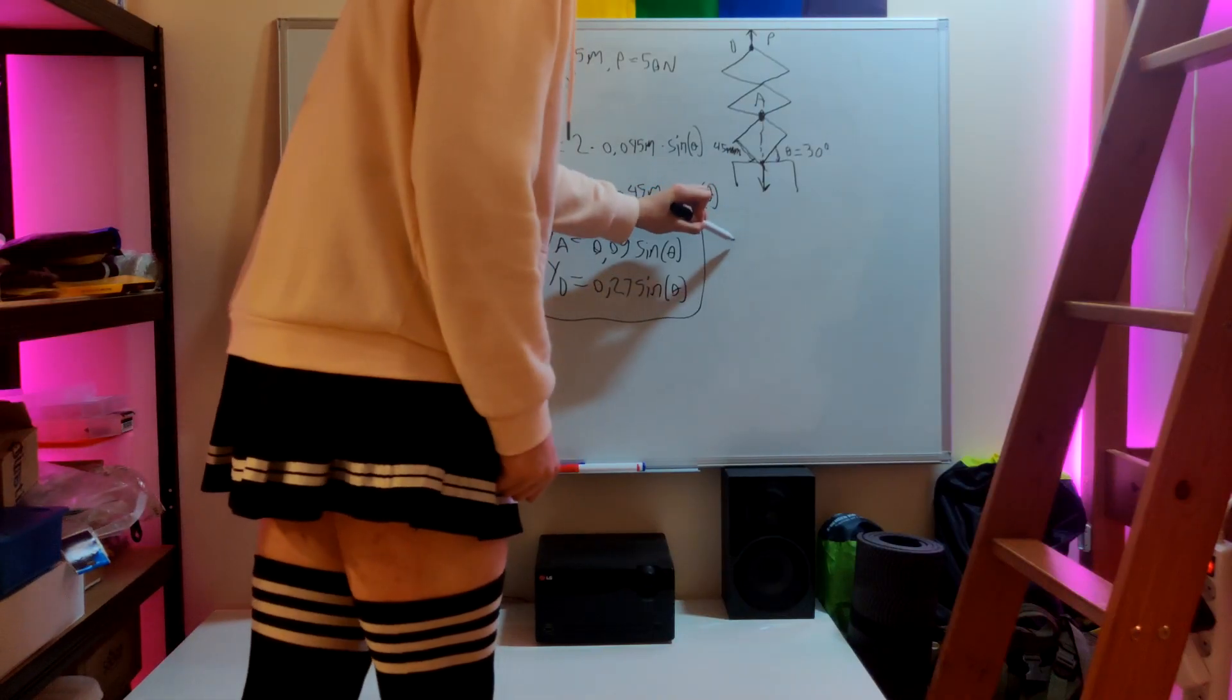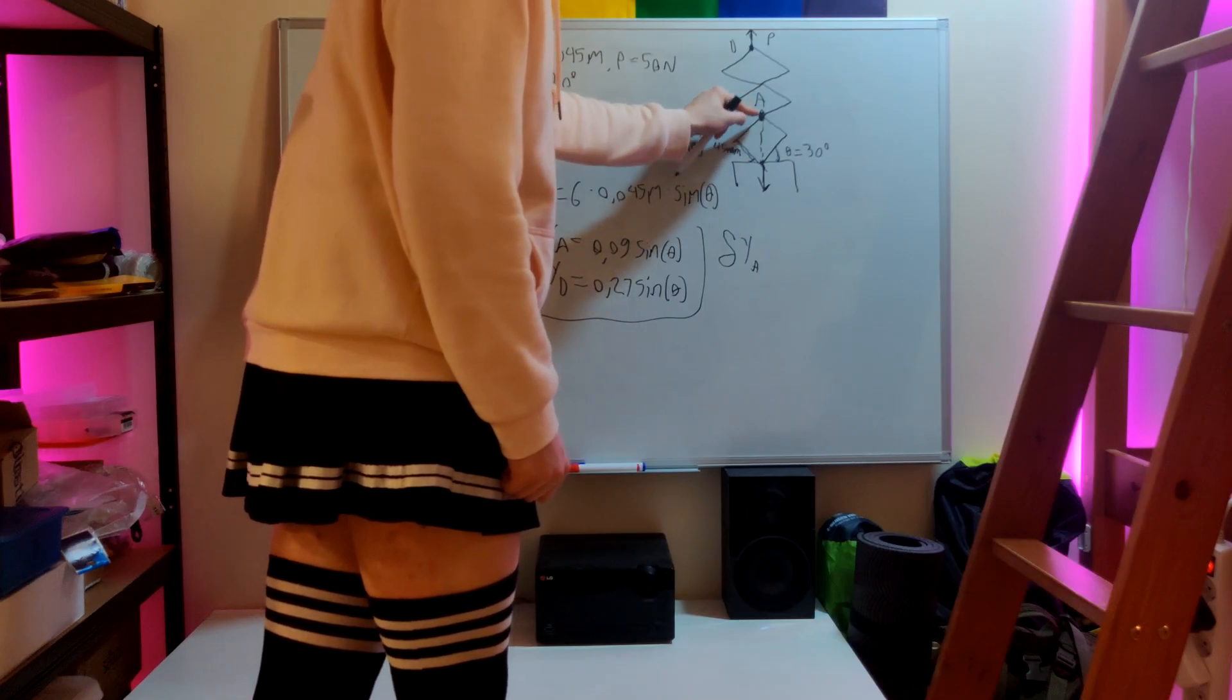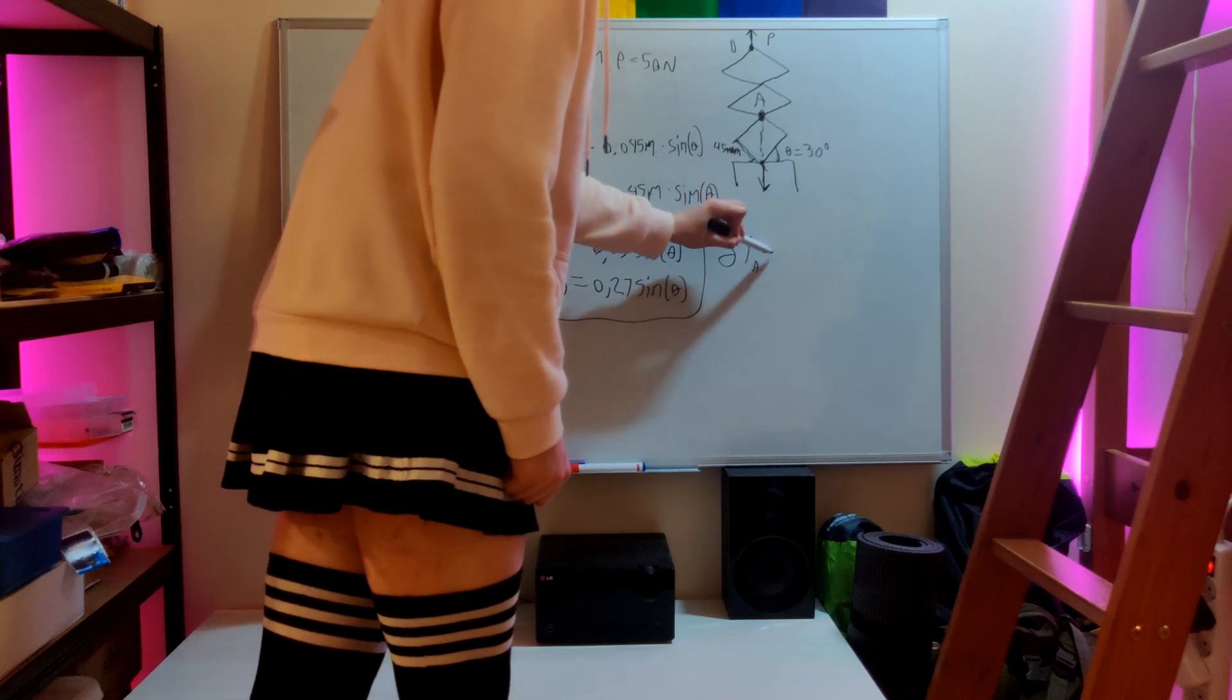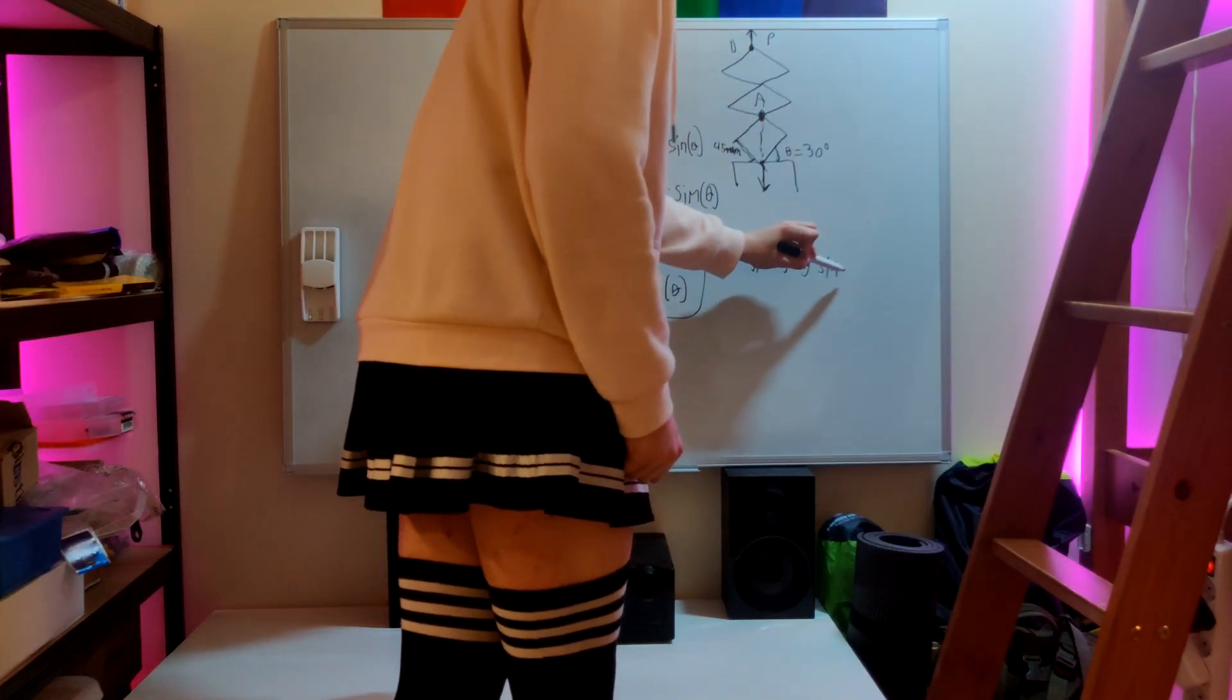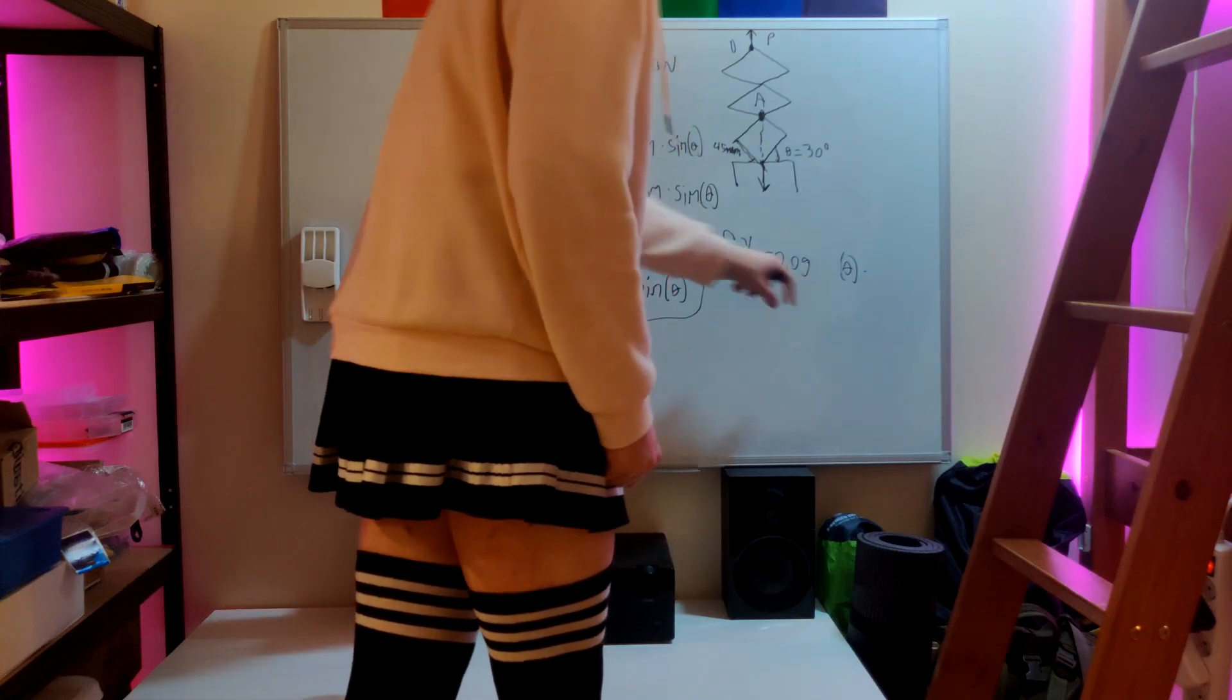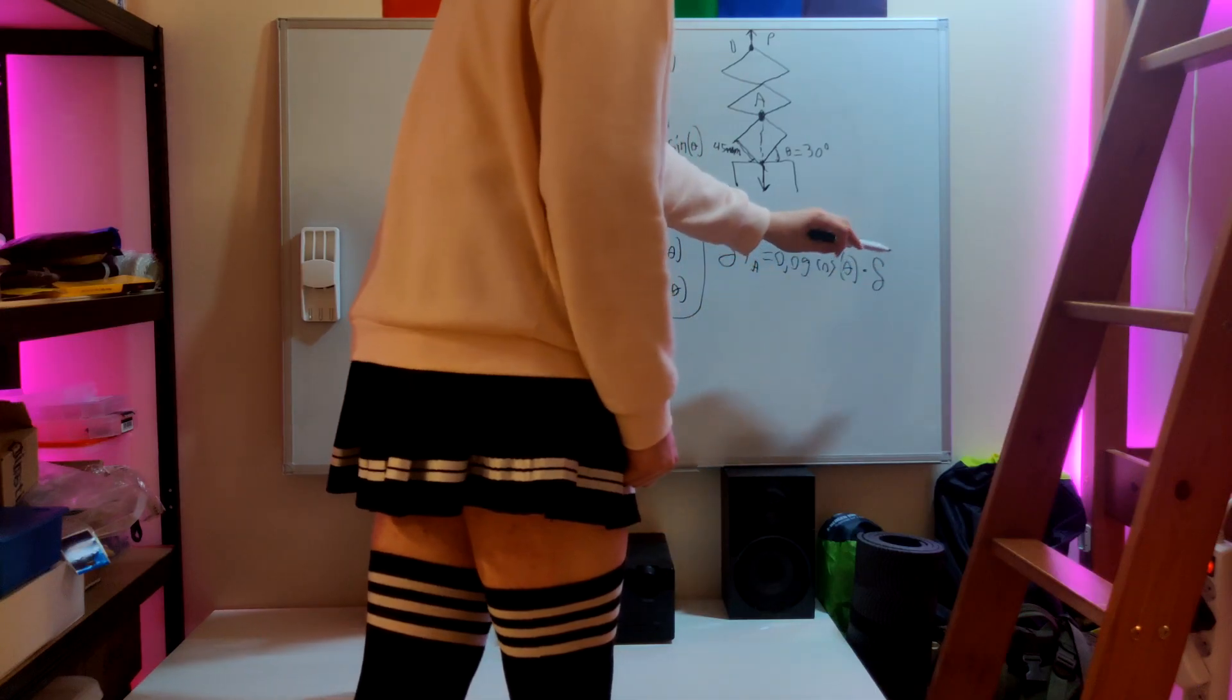So we can write the infinitely small change in Y, which is basically the infinitely small change in where this point right here is when this angle is changed by an infinitely small amount. We can write it as 0.09 cosine of theta, because the derivative of sine is cosine, times the infinitely small change in theta.